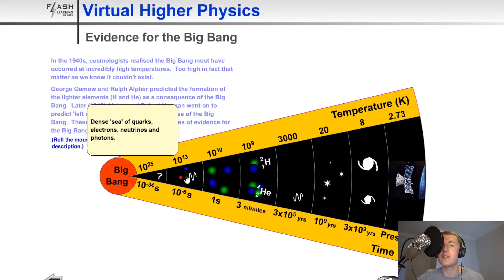Then about 10 to the minus 6 seconds after the Big Bang, there was a dense sea of quarks, electrons, neutrinos, and photons, so lots of particles.